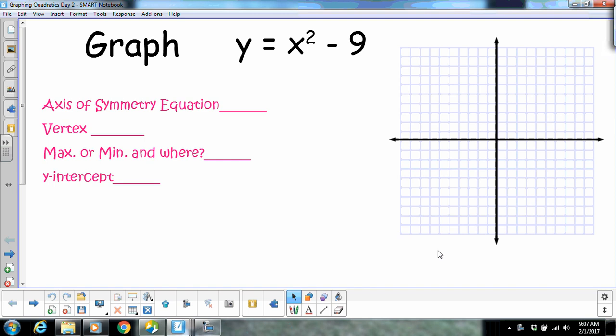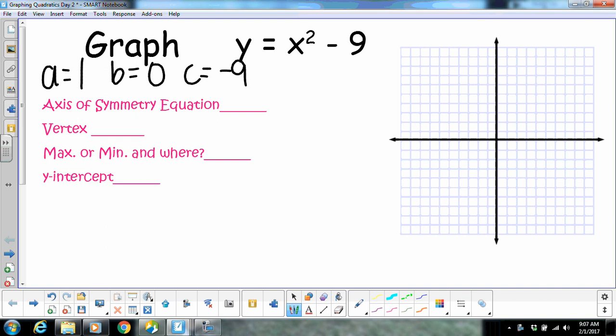Okay, the first thing is always to find the axis of symmetry. So we need to find the axis of symmetry. Alright, A is what? 1. Okay, do we have a B? No. And our C would be negative 9.